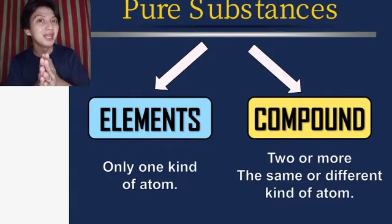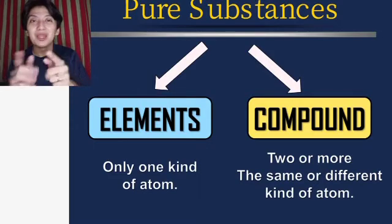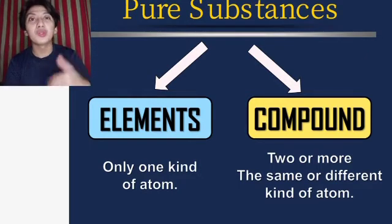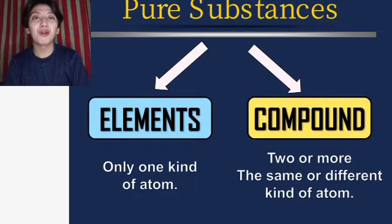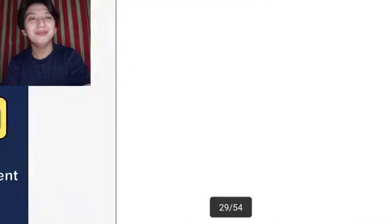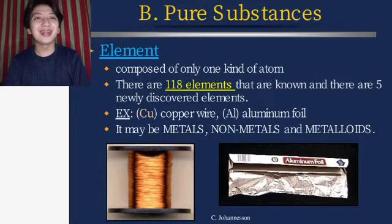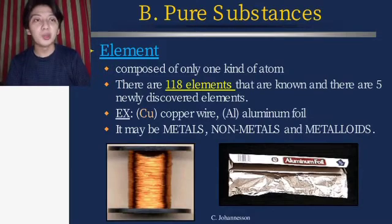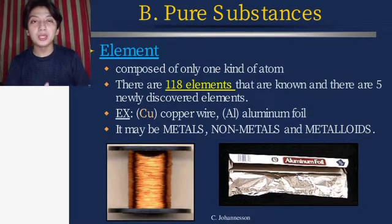Always remember to bring your periodic table — it is very important when studying chemistry. Under pure substances, element is composed of only one kind of atom. There are 118 known elements, and there are five newly discovered elements. As you can see in the periodic table, there are also blank parts because some elements have not yet been discovered.